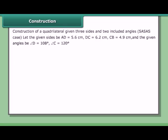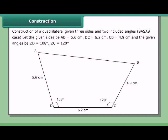Construction of a quadrilateral given three sides and two included angles — the SASAS case — let the sides be AD = 5.6 cm, DC = 6.2 cm, CB = 4.9 cm, and the given angles be angle D = 108° and angle C = 120°.